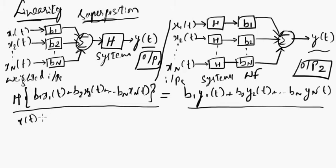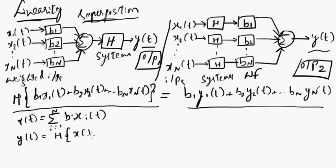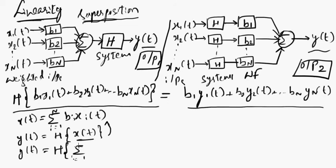Now let us write some more equations. The input x(t) is a weighted sum, which can be written as the summation from i=1 to n of bi*xi(t). The response y(t) of the system is H applied to x(t), and since x(t) is a weighted sum, this can be rewritten as y(t) = H of [summation i=1 to n of bi*xi(t)]. This equation corresponds to the first block diagram.